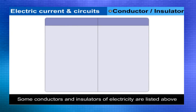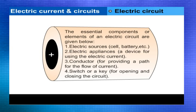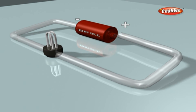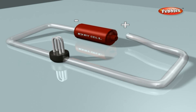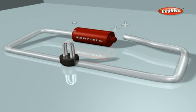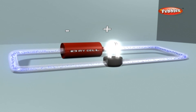Conductors and insulators of electricity are listed. The essential components of an electric circuit are: electric sources (cell, battery, etc.), electric appliances (a device for using electric current), a conductor (for providing a path for the flow of current), and a switch or key (for opening and closing the circuit). In a circuit, if the switch is opened or the wire is cut, the flow of current is stopped and the circuit is open or incomplete. In an open circuit, no current is drawn from the cell. If the switch is closed, current flows, as indicated by the glowing of an electric bulb in the circuit — the circuit is then said to be closed or complete.